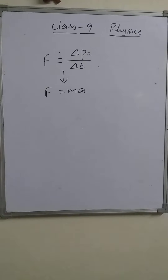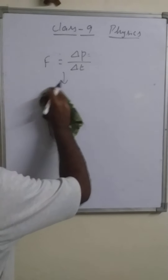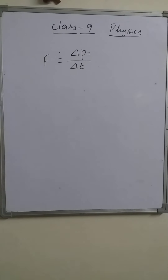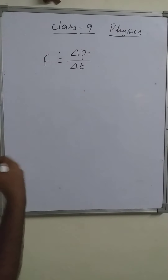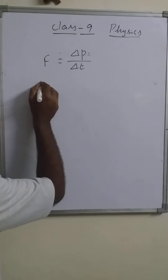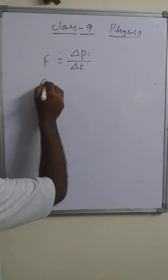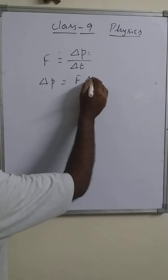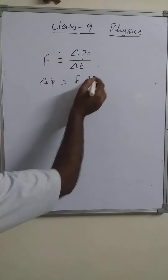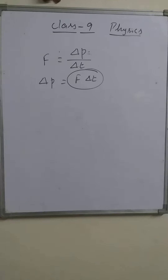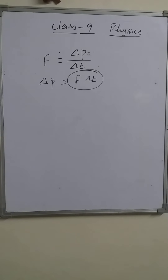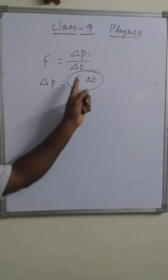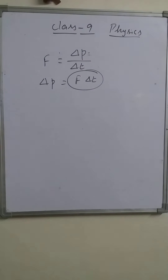From this relation we are going to obtain one more quantity by cross multiplication: ΔP equals F times Δt. So F multiplied by Δt is the force applied on an object in a short interval of time.